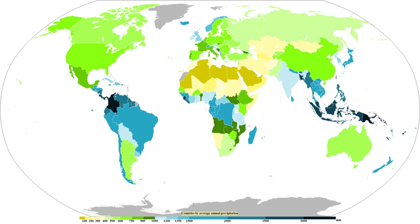Mechanisms of producing precipitation include convective, stratiform, and orographic rainfall. Convective processes involve strong vertical motions that can cause the overturning of the atmosphere in that location within an hour and cause heavy precipitation, while stratiform processes involve weaker upward motions and less intense precipitation. Precipitation can be divided into three categories based on whether it falls as liquid water, liquid water that freezes on contact with the surface, or ice. Mixtures of different types can fall simultaneously.